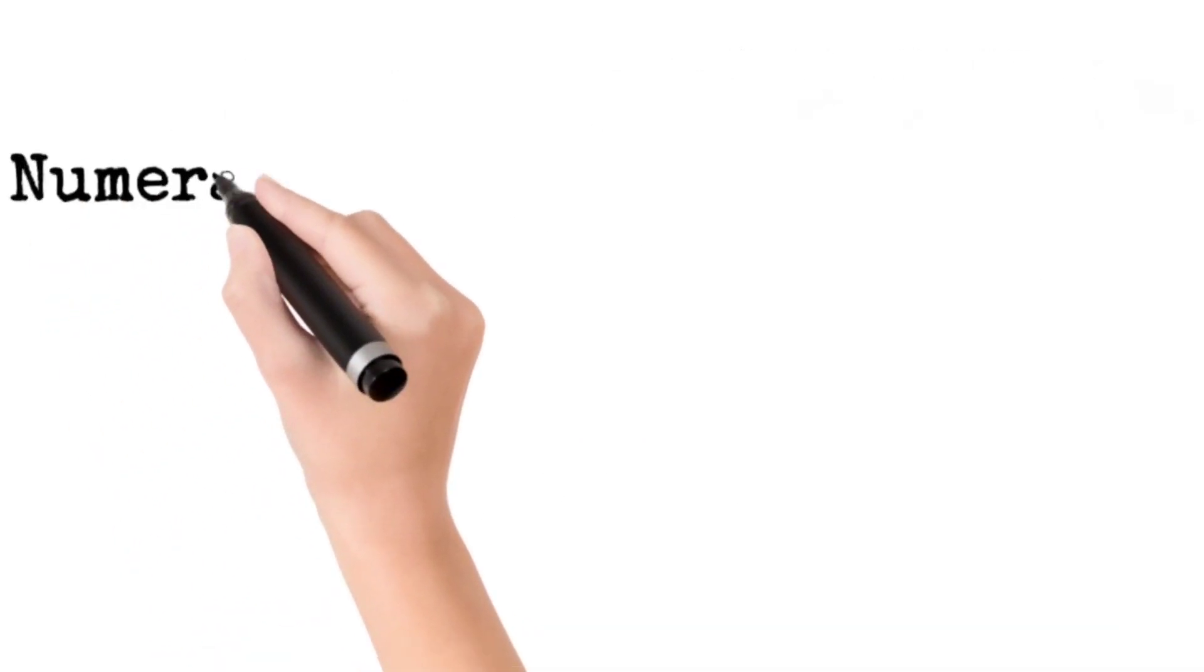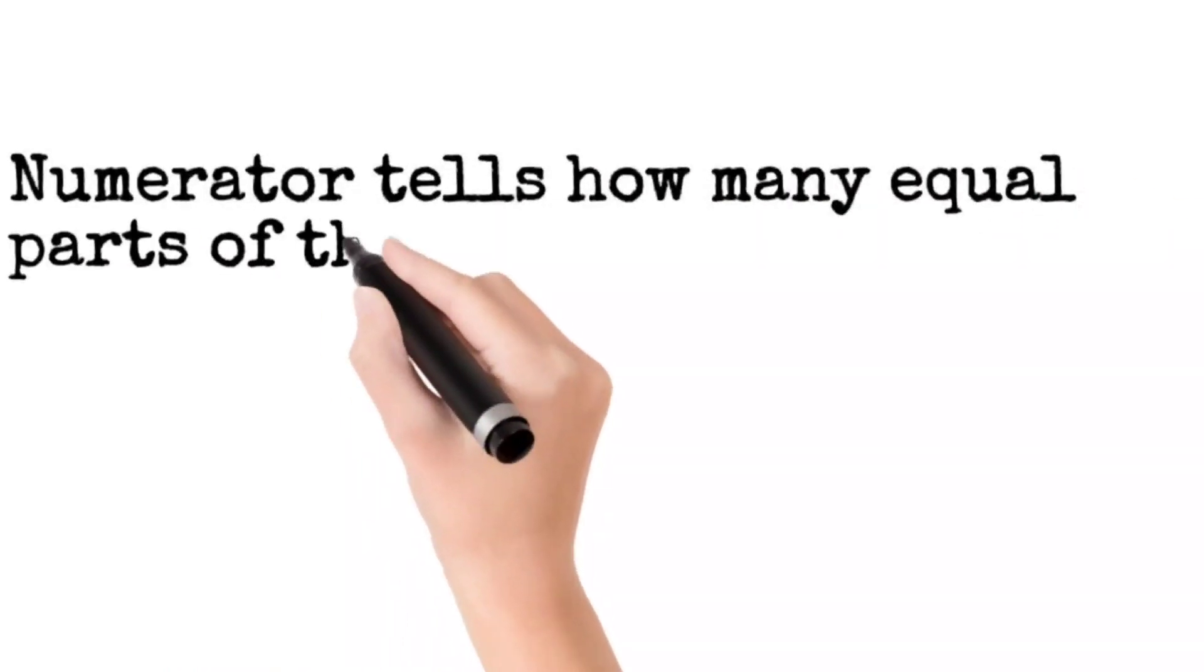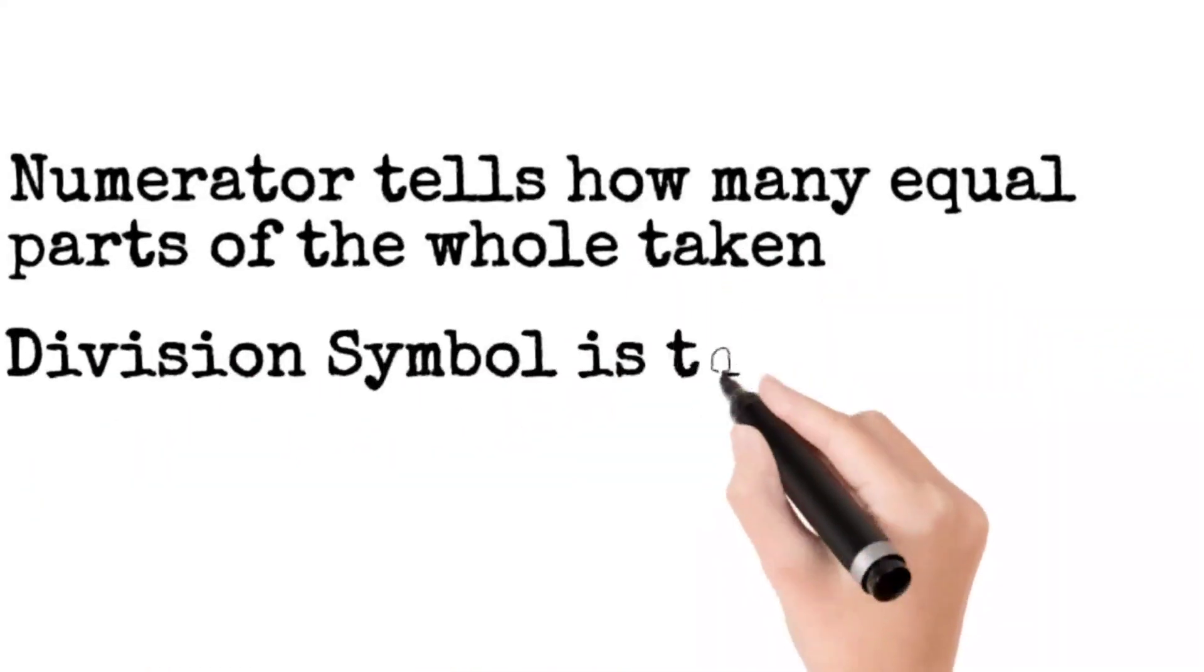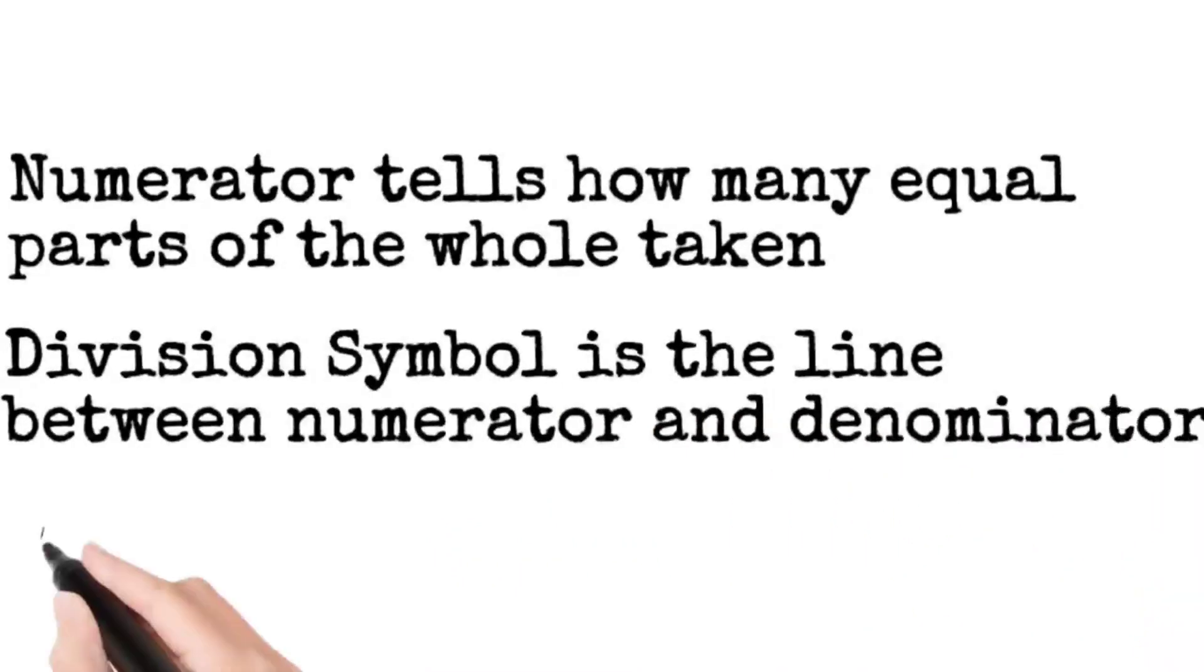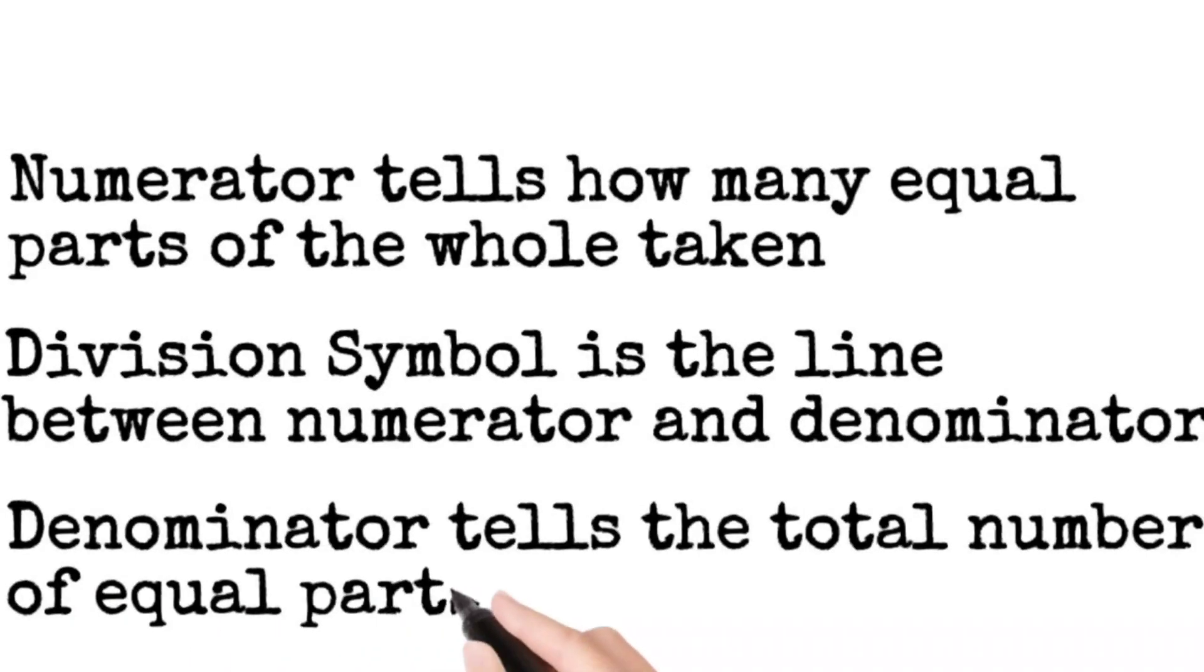Numerator tells how many equal parts of the whole taken. Division symbol is the line between the numerator and denominator. Denominator tells the total number of equal parts in a whole.